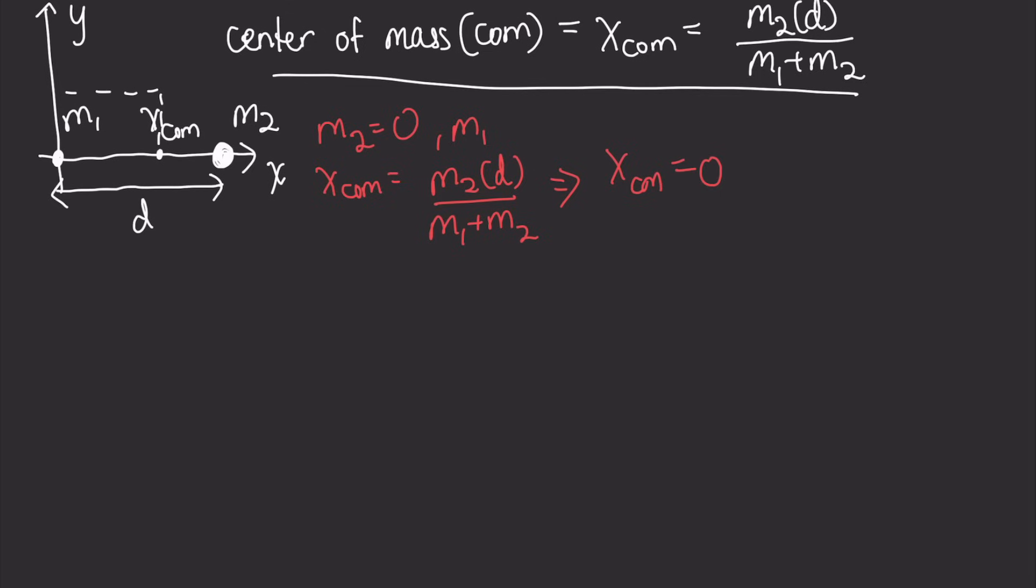If we consider another case where, let's say, M1 equals M2, then we should expect the center of mass to be about halfway in between them since they have equal mass.